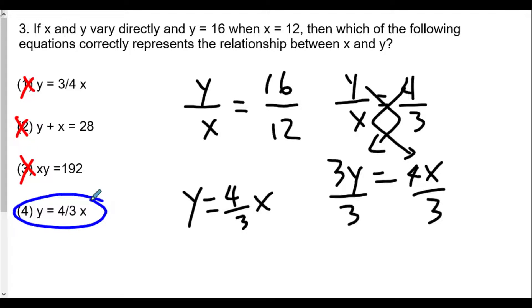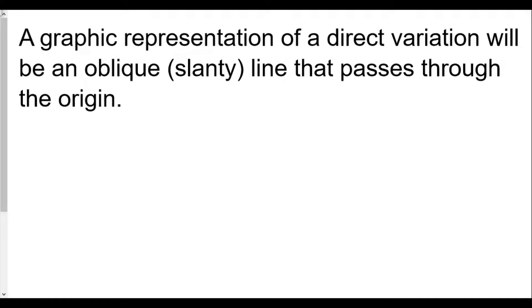Now, we'll notice in this case that this direct variation, y equals 4 thirds x, if we wrote it as an equation of a line, it would be a line that looks like it has no y-intercept, or the y-intercept is going to be 0. So one way to describe a direct variation would be graphically. A graphic representation of a direct variation will be an oblique or slanty line that passes through the origin. Or as a function, our direct variation will be a linear function that passes through the origin and has a slope that is not 0 or undefined. Well, technically, undefined it can't be a function anyway.